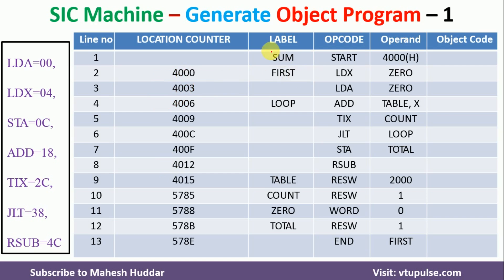The same thing is shown in this slide. The sequence is: 4000, 4003, 4006, 4009. After 9, since this is hexadecimal addition, we get 400A, then 400B. These are 3-byte increments, so the next is 400C, then 400D, 400E, 400F. After F in hexadecimal, there is nothing more, so it becomes 4010.